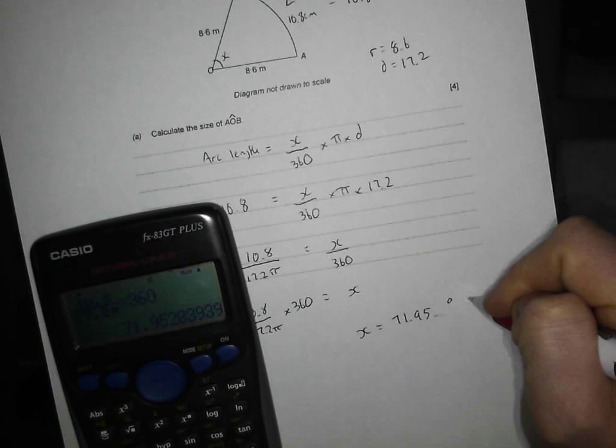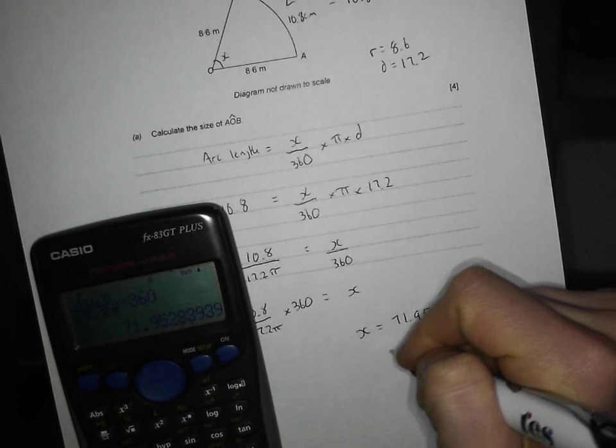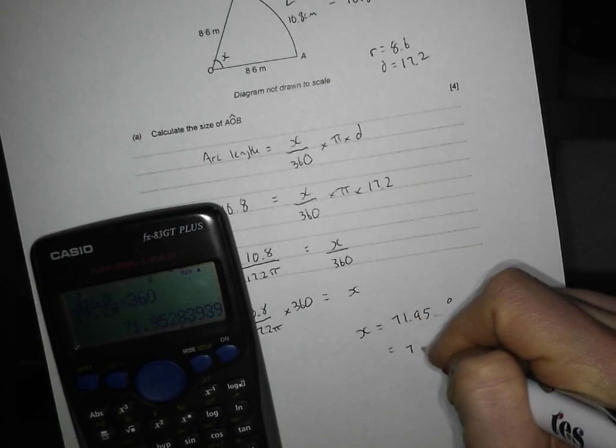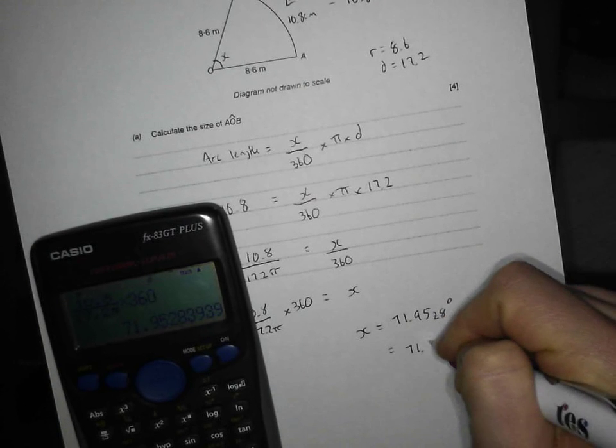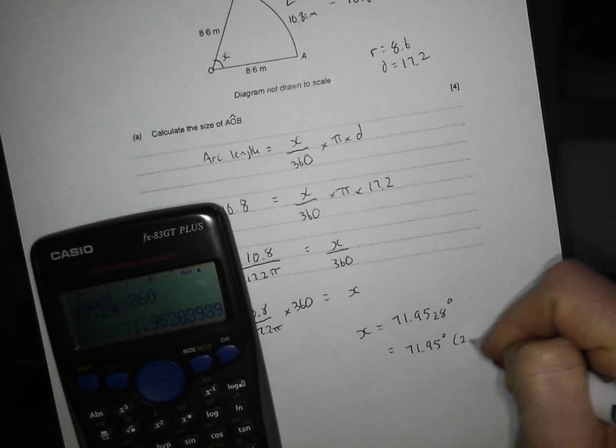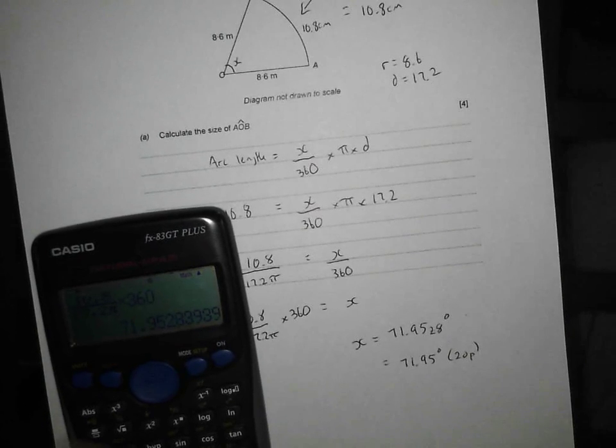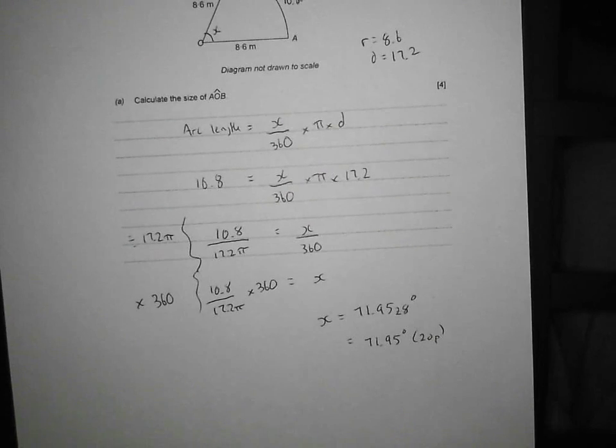And I'm going to, I might as well round that to 70, well, actually 71.528. Yeah, I'm going to go for 71.95 degrees to two decimal places. And I think that looks a fairly sensible answer for the angle that that is.